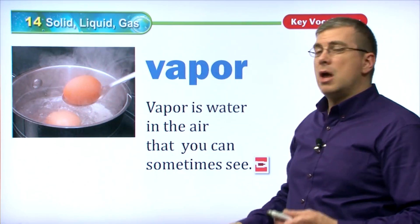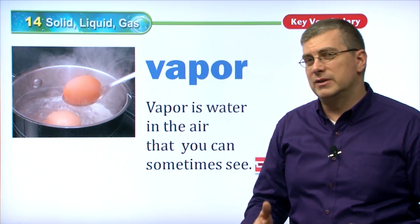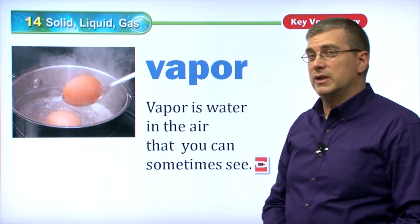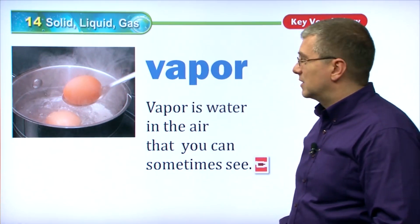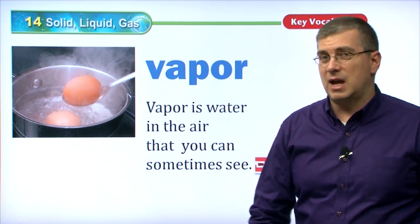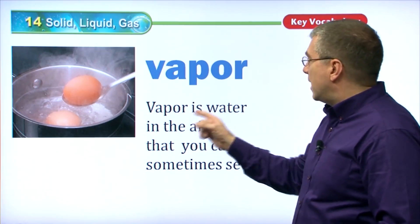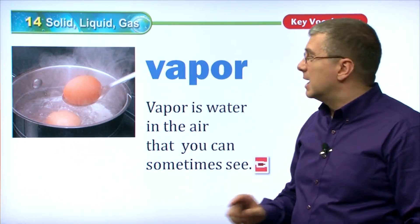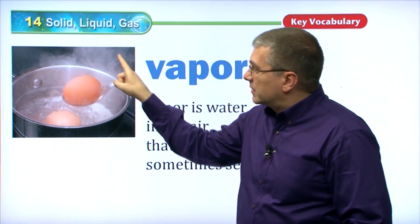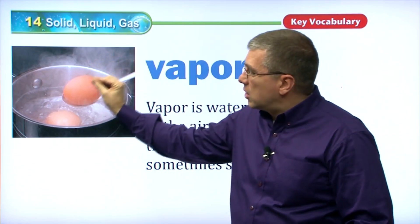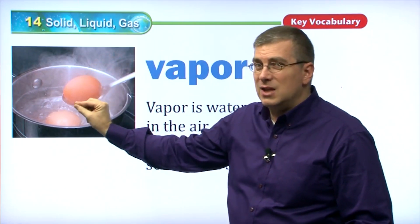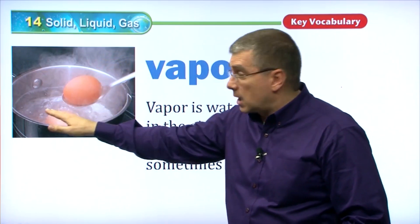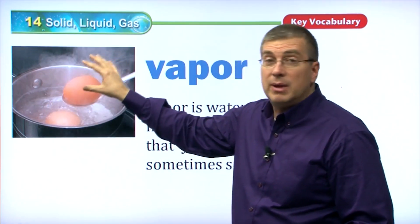When we talk about other ways to describe these different states, we have the word vapor. Vapor is an interesting state. Using the example of water, vapor is water in the air that you can sometimes see. Vapor is actually a gas — a gas that's very close between the stage of liquid and gas. It's not a liquid anymore; it is becoming a gas.